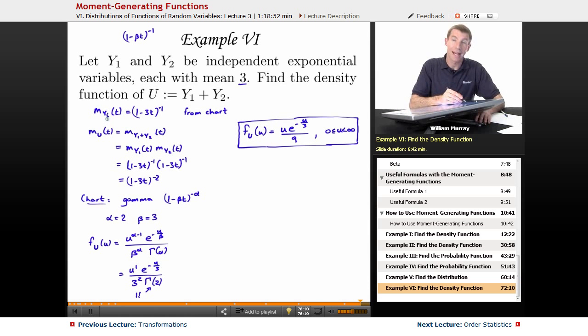I was given that we had exponential variables, so the first thing I did was look up the moment generating function for the exponential variable on the chart, which is 1 minus, well, it was beta t in general, but beta is the mean of the exponential distribution, so that's 3 in this case. We were given that it was 3.